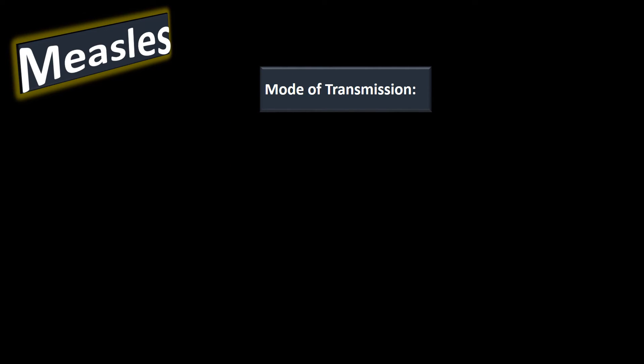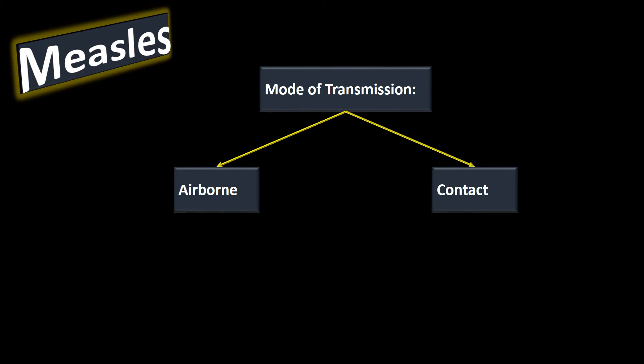Measles is one of the most highly communicable diseases. It is said that 90% of unimmunized people who come into contact with an infected person will contract it. It is spread by airborne transmission — when people cough and sneeze, the droplets in the air are very contagious. It is also spread by contact with contaminated surfaces; if someone touches a contaminated surface and then touches their mouth, eyes, or nose, they are at risk.